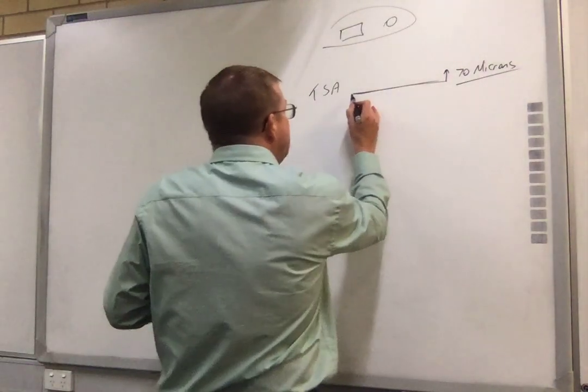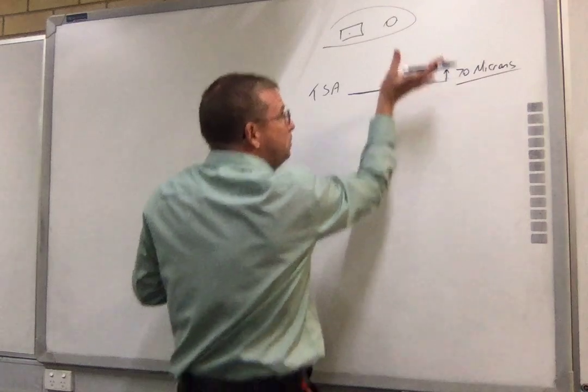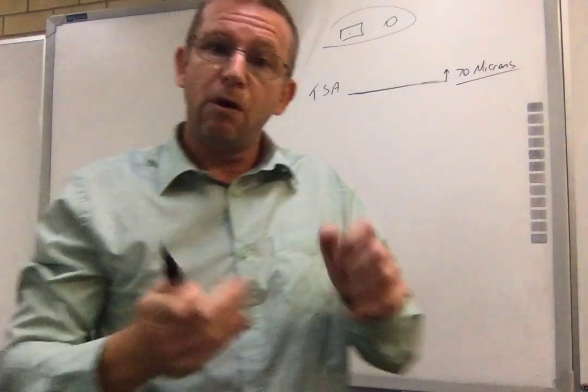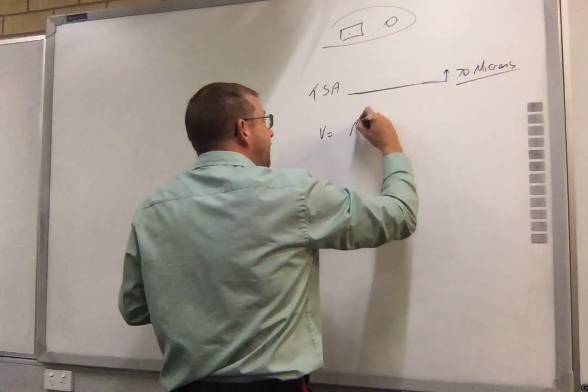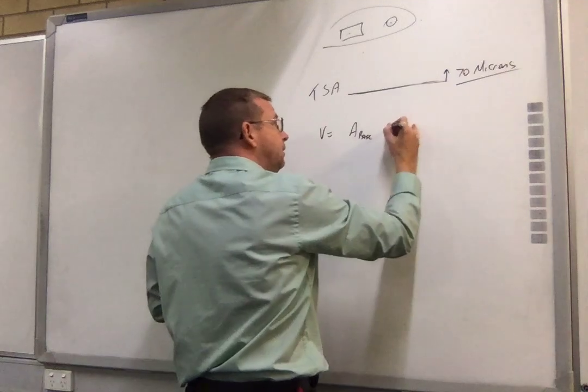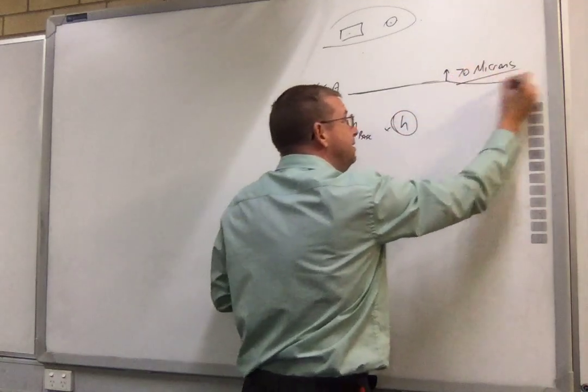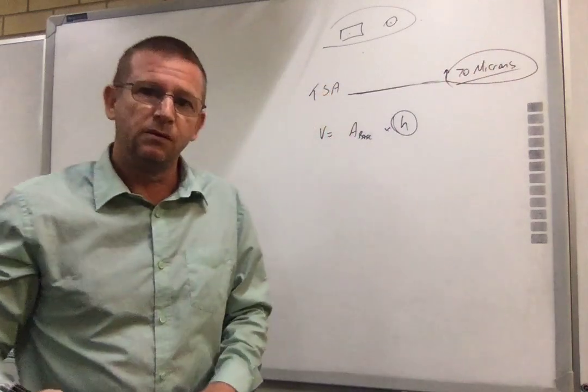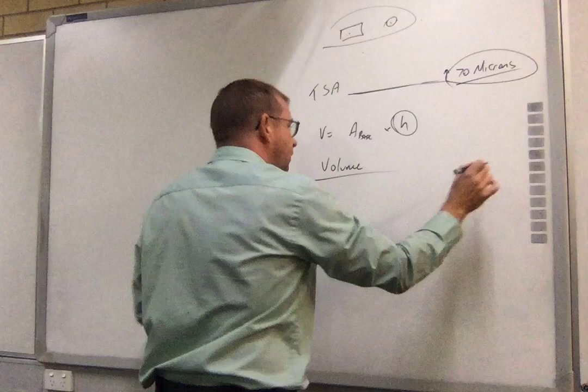So all of a sudden, we've got all of these shapes and you've built a thickness of gold on top of it. So the volume will be the area of the base, which is all of these different shapes put together, multiplied by the height. That height is the 70 microns. And that's going to get you a volume.